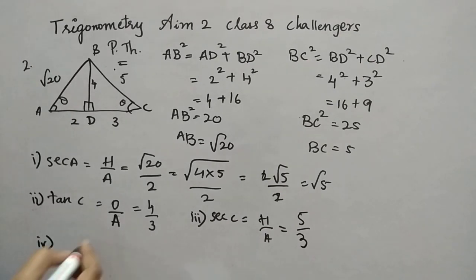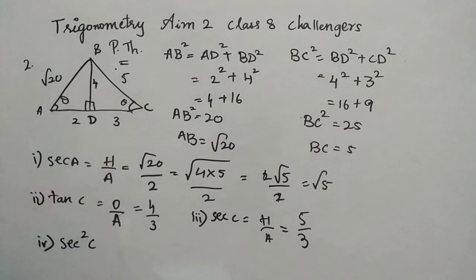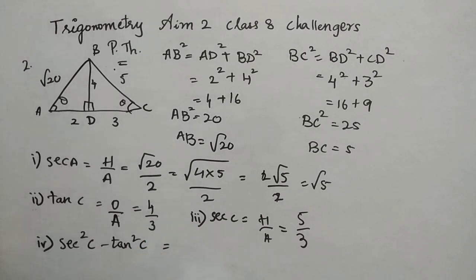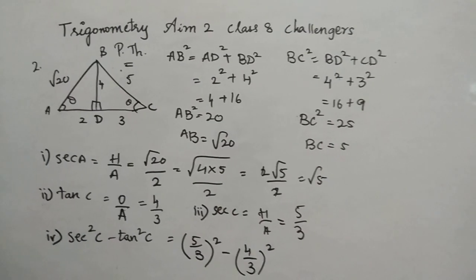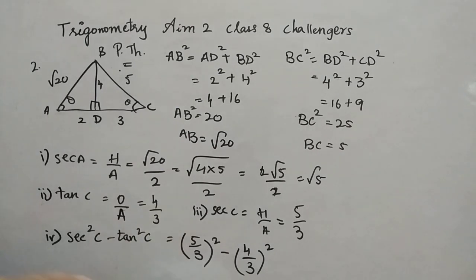Now fourth one, it is secant square theta, sorry, secant square C minus tan square C. So this one, formulas for secant and tan are already here. So instead of writing it again, we can just copy from here. Secant square, secant C already we know. So that's 5 by 3 squaring we will do. Minus tan C also we know, 4 by 3. 4 by 3 whole square, right? Now, what we can do, we will first square it. Then it will become 25 by 9 minus 16 by 9, right? That will be 9 by 9 and that is 1.